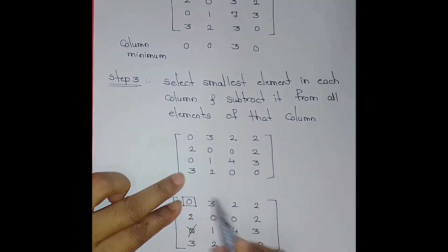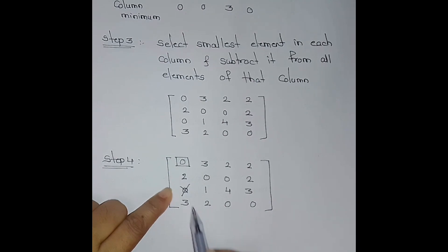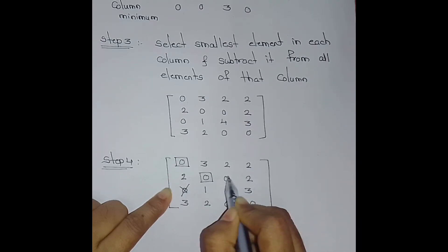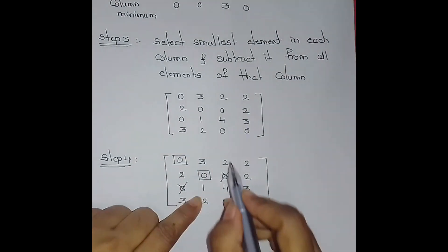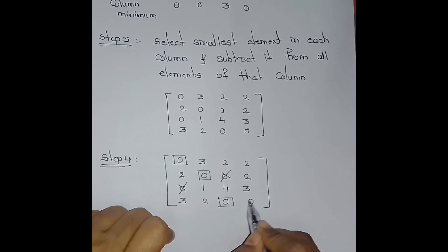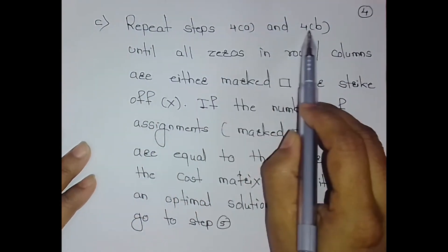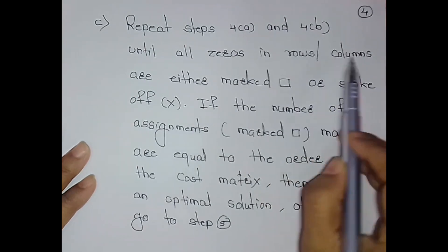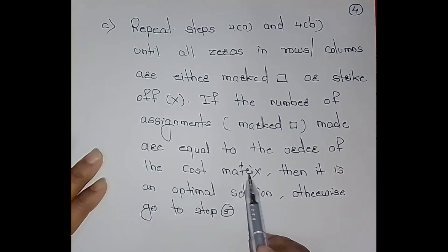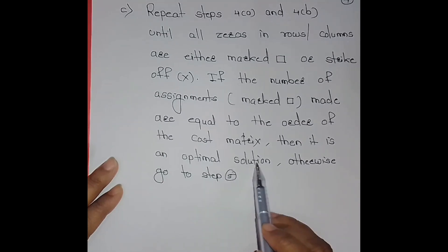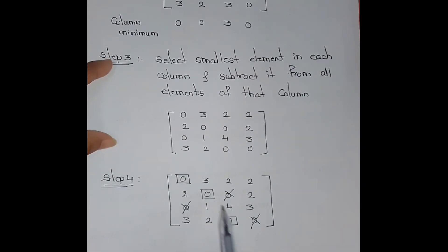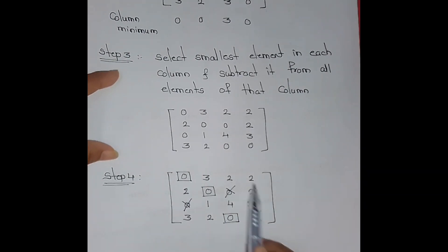We then scan the columns. In the second column there is one zero, so we make the assignment and strike off zeros in that row. After repeating steps 4a and 4b until all zeros are either marked or struck off, we count the assignments: 1, 2, 3 — there are 3 assignments. Since the number of assignments does not equal the order of the cost matrix (4), we do not have an optimal solution yet.